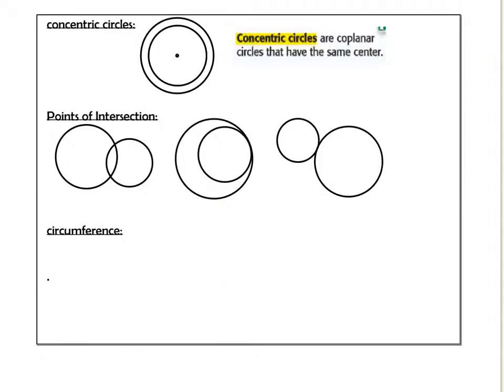All right, new word: concentric circles. Concentric circles are coplanar circles that have the same radius. It's kind of like a bullseye, or even if you want to think about it as our curling activity, kind of like the curling activity. So as you're looking at this, these circles here, they both have the same center. And I could put a bunch of them in here, and then just call them all concentric circles.